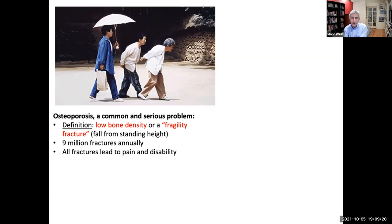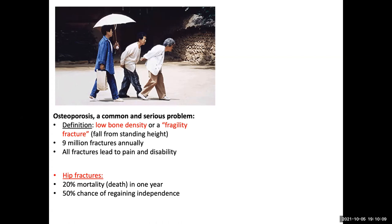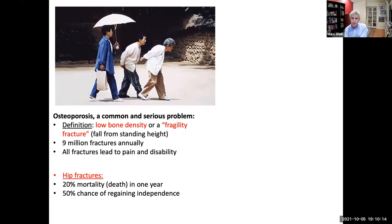There are really two ways that we define osteoporosis clinically: either having a low bone density — we'll talk about exactly what that means — or having weak bones. How do we say that bones are weak? Generally we use the term fragility fracture: a fracture that occurs with minimal trauma, meaning a fall from standing height. We can get in a car accident or fall off a building and break a bone — that doesn't count as a fragility fracture. A fragility fracture is if you slip on ice or fall from a step in the kitchen and that leads to a broken bone. There are lots of these fragility fractures every year, and all of them lead to pain and disability.